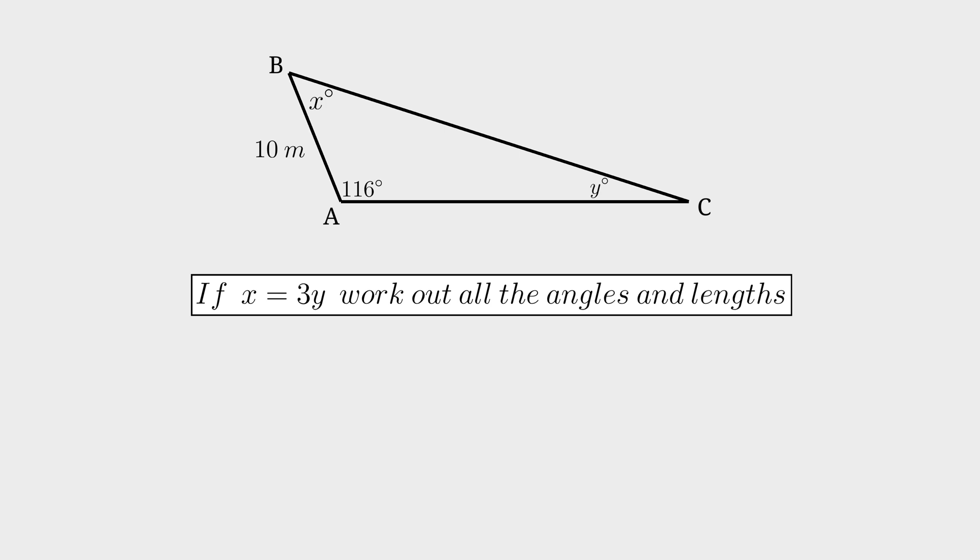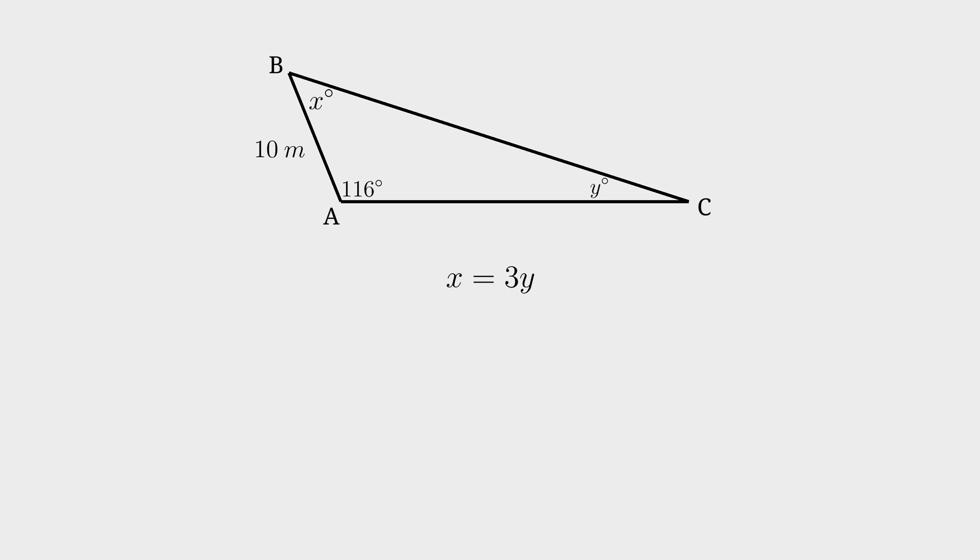I would start by working out all the angles. So we know X is equal to 3Y, so we can replace the X with 3Y. The sum of all the angles of a triangle is 180 degrees. So make 116 degrees plus 3Y plus Y equal to 180 degrees.